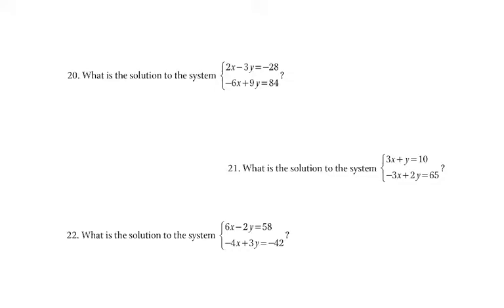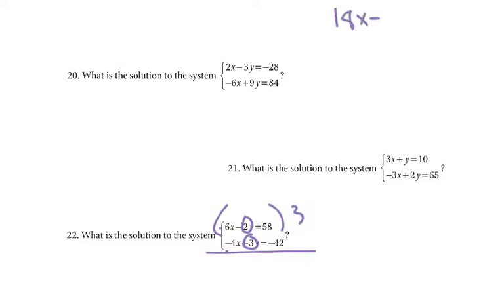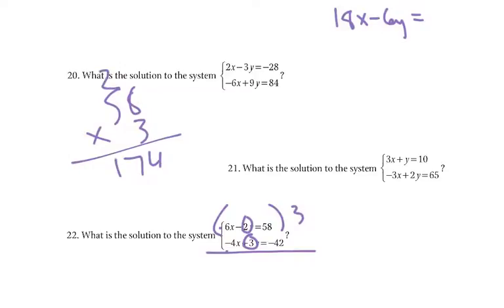Picking up where we left off, question 22. If we're solving with elimination first, the first thing we would need to do is make two of these equal each other. I'd look at negative 2 and positive 3 — they can both become 6. If I times this by 3, I'd get 18x minus 6y equals 58 times 3, which is 174.